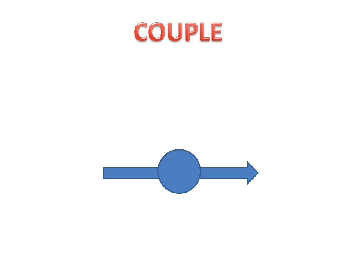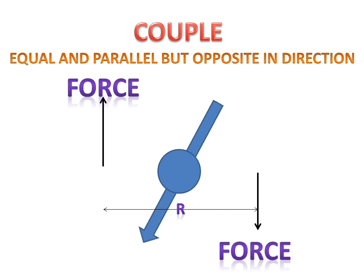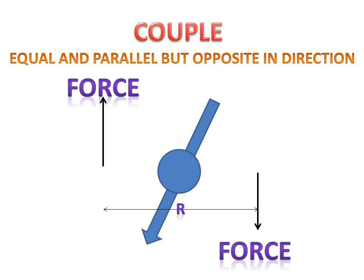Now we discuss about Couple. What is Couple? Couple is equal and parallel but opposite in direction forces. When we apply equal and parallel but opposite in direction forces, a rotation effect occurs. In a couple, we have a force in the downward direction and a force in the upward direction, and R is the distance between the first point and the second point. A common daily life example is opening a bottle cap, opening a nut, opening a screw, or tightening a nut or bottle cap — all are examples of a couple.